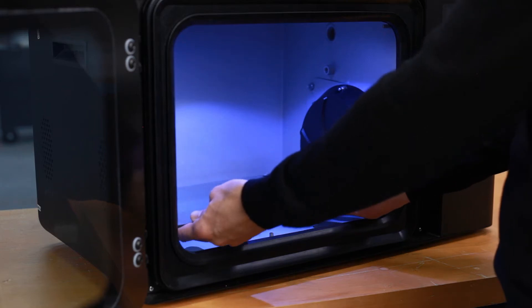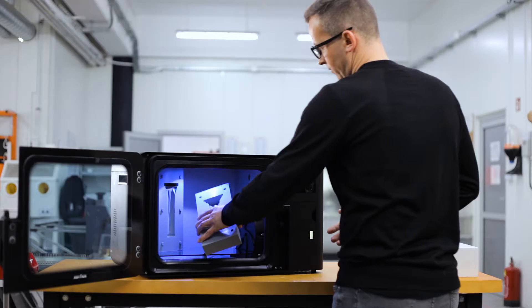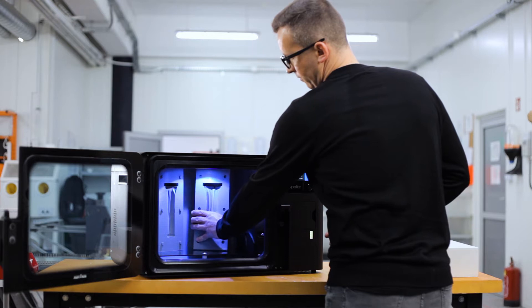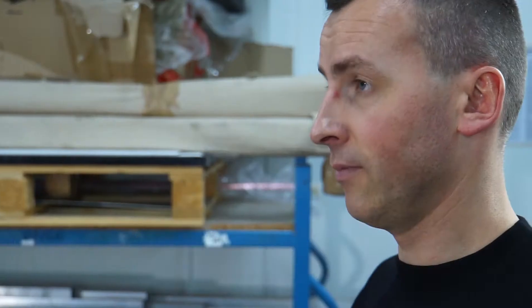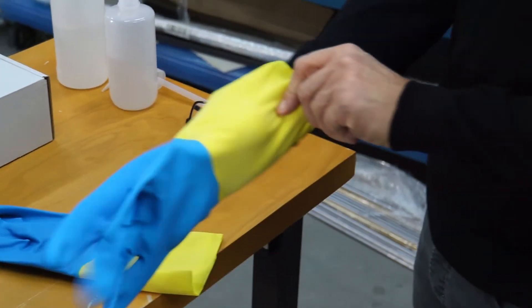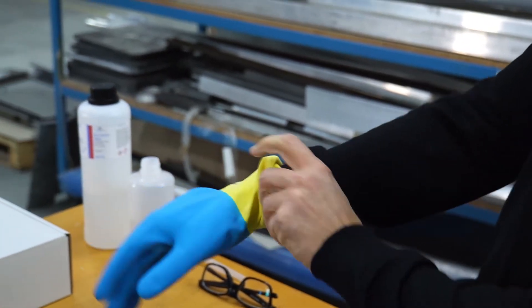Put the model on the platform. If you smooth more than one model, keep about 2 to 5 cm distance between them. Use only solvents approved by the manufacturer, acetone or MEK.